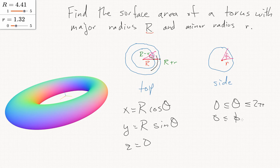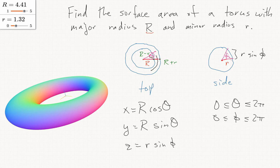Phi will be between 0 and 2π. From the side slice, we can see that the z coordinate will be little r sine phi. Note that this phi is different from phi in spherical coordinates — it's being measured from the equator of the tube rather than from the top, and it goes between 0 and 2π rather than between 0 and π. We still need to adjust the x and y values.